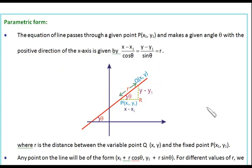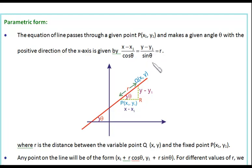Next we have the parametric form of line. The equation of a line that passes through a given point P and makes a given angle theta with the positive direction of x-axis is given by: (x minus x1) divided by cos theta equals (y minus y1) divided by sin theta, and that is assumed to be r. The line is passing from the point P, that is (x1, y1), and Q is any point on the line, that is (x, y).